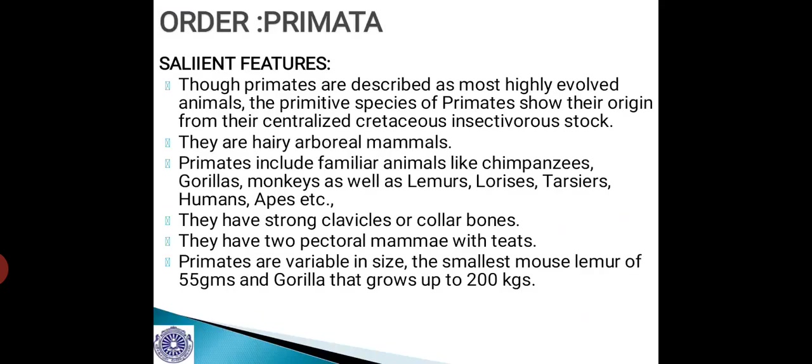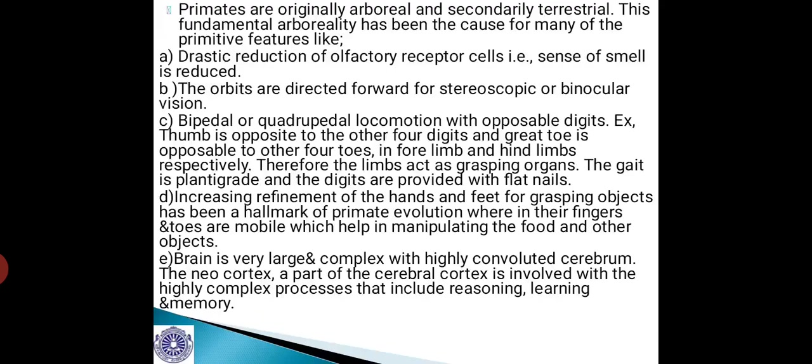They have strong clavicles or collarbones, and two pectoral mammae with teats. Primates are variable in size — the smallest mouse lemur weighs about 55 grams, while gorillas grow up to 200 kg. Primates are originally arboreal but secondarily terrestrial. This fundamental arboreality has caused many primitive features, including: drastic reduction of olfactory receptor cells so the sense of smell is reduced; orbits directed forward for stereoscopic or binocular vision; and bipedal or quadrupedal locomotion with opposable digits — the thumb is opposite to the other four digits.